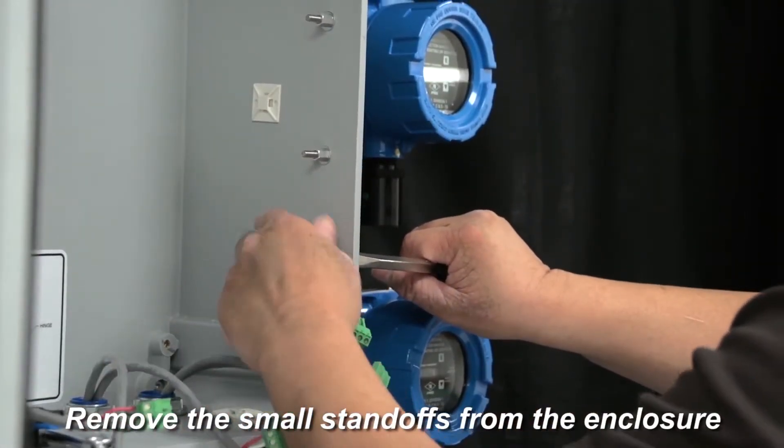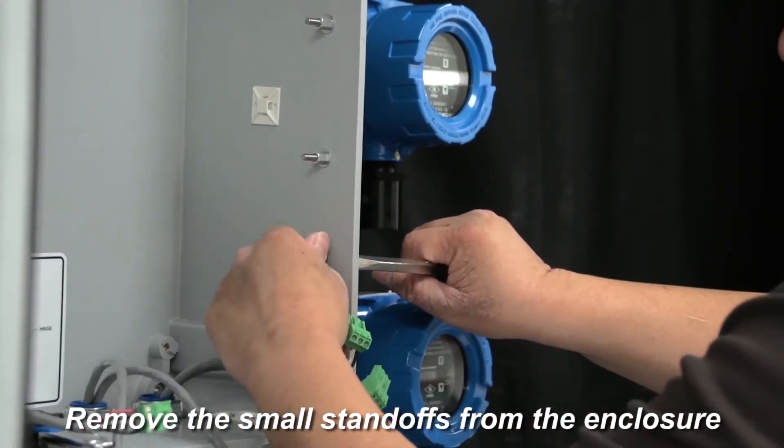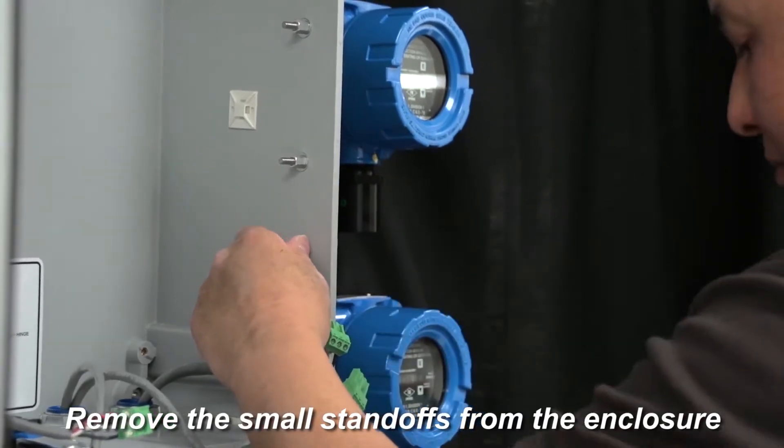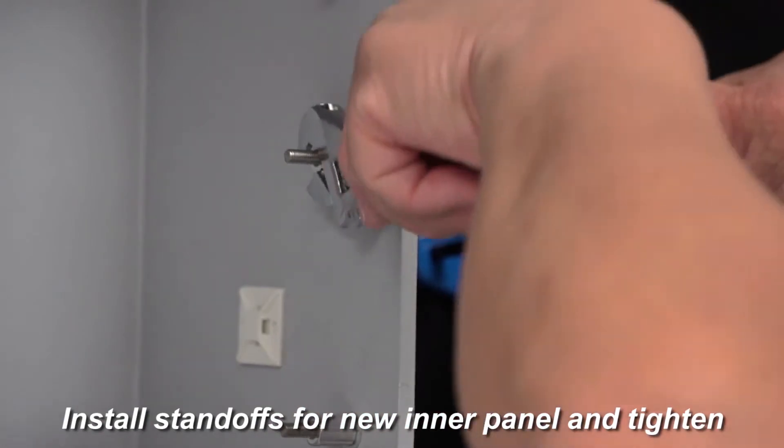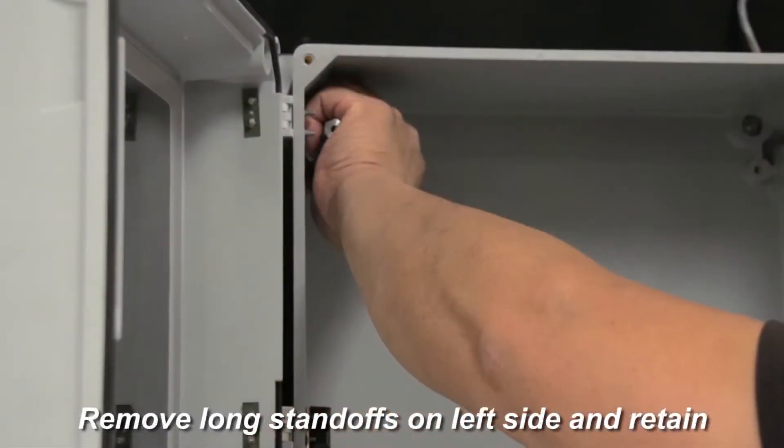Then, remove the small standoffs that held the inner panel and attach in the same holes the new short standoffs that are included with the kit and then tighten them. These will be used to fasten the new front panel later.